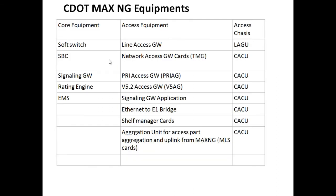In the CDOT MAX to MAXengi migration process, the core equipment includes the soft switch, session border controller, signaling gateway, rating engine, and EMS. The access equipment includes the line access gateway in the LAGU chassis, network access gateway card (TMG), PRA access gateway cards, V5.2 access gateways, signaling gateway application, Ethernet to E1 bridge, shelf manager card, and aggregation unit for access — all forming part of the CACU chassis.